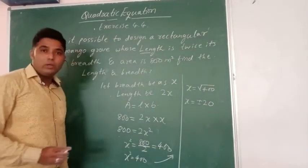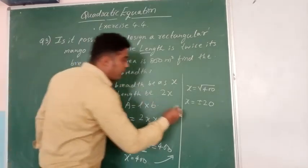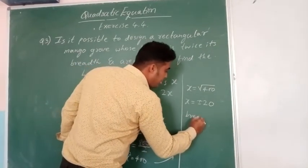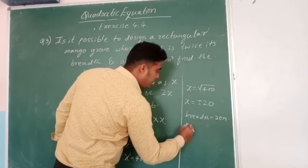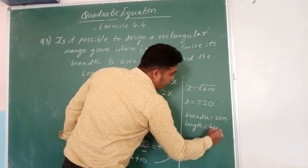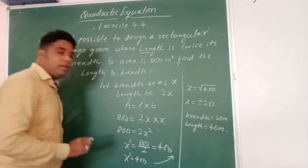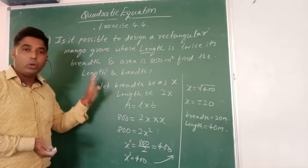This is the value, length and breadth. So breadth becomes 20 meters, and length becomes 40 meters. So this is the length and breadth of a rectangular mango grove.